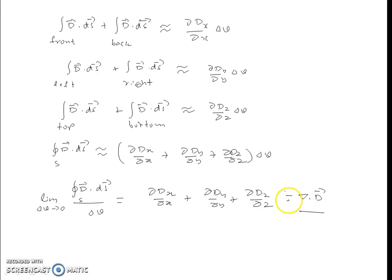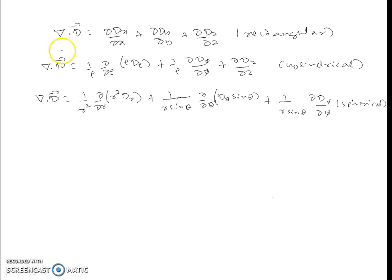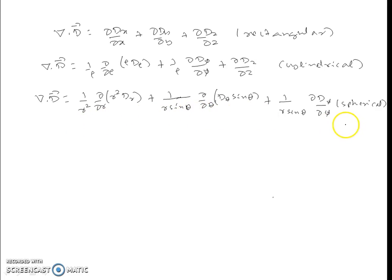In the limit as delta V tends to zero, we replace the approximate sign with an equal sign. In rectangular coordinates the divergence of D has been derived. By taking volume elements in cylindrical coordinates, the divergence of D can be obtained similarly, and in spherical coordinates the divergence of D is given by the corresponding expression.